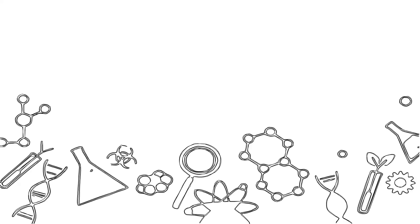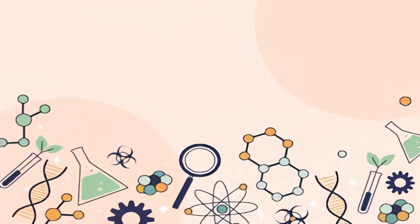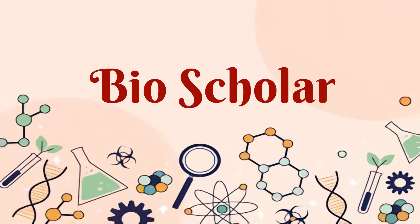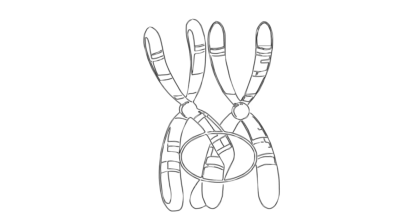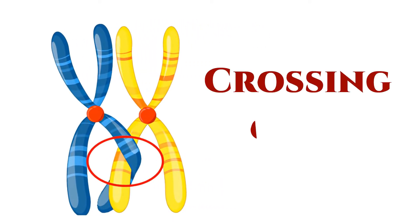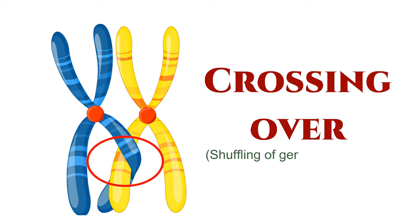Hey there, science enthusiasts. Welcome back to Bioscholar. Today, we're diving into the fascinating world of genetics to explore a key process that shapes the diversity of life — crossing over. If you're curious about how genetic material gets shuffled during meiosis, you're in the right place. So, let's get started.